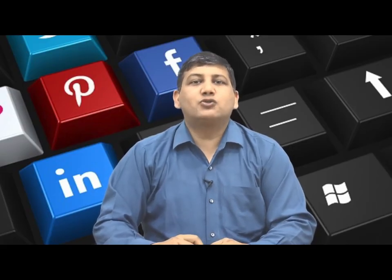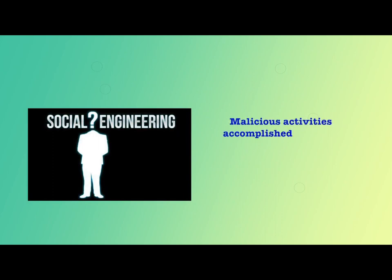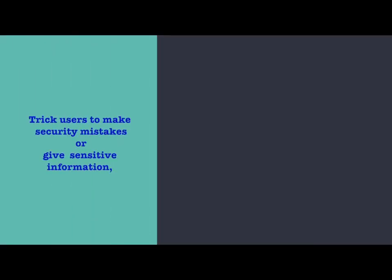Let us start our discussion with defining social engineering. Social engineering is a term used for a broad range of malicious activities accomplished through human interactions. It uses psychological manipulation to trick users into making security mistakes or giving away sensitive information, with or without the use of technology.